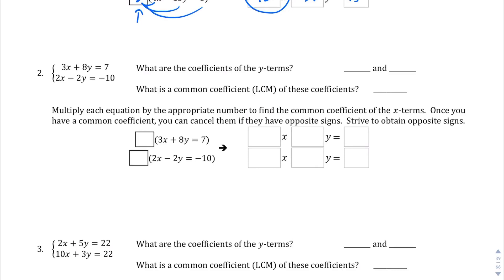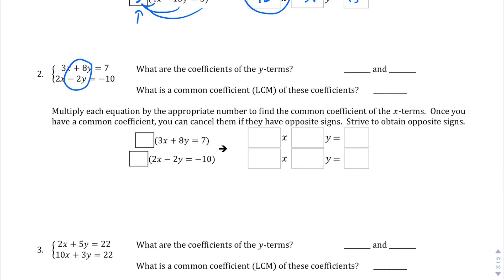And then in this next question, question number 2, we're going to work with the y terms. We can do the same thing with the x terms, but I think they want us to have practice doing the y terms as well. And also because they want us to try to get opposite signs. And 8 and negative 2, positive 8 and negative 2 are opposite signs. So another reason why they selected y in this case. So what are the coefficients of the y terms? Well, it's going to be positive 8 and negative 2. And what is the common coefficient of these coefficients, or the least common multiple? Well, it's going to be 8 actually, since 2 can also go into 8, right? 2 times 4 is 8, 8 times 1 is 8. So the least common multiple in this case is just 8.